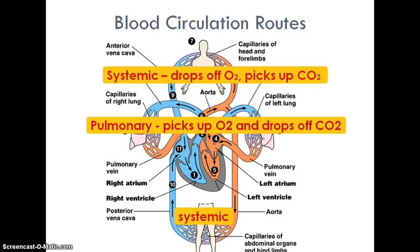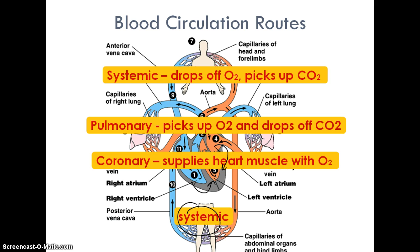In the following slides we'll go in depth into systemic circulation, which has many subdivisions. But first I want to mention one that sometimes gets overlooked — the circulation pattern that supplies the heart muscle itself with blood. A branch of the aorta comes off the arch and supplies blood to the coronary vessels, delivering oxygen to the heart muscle itself.